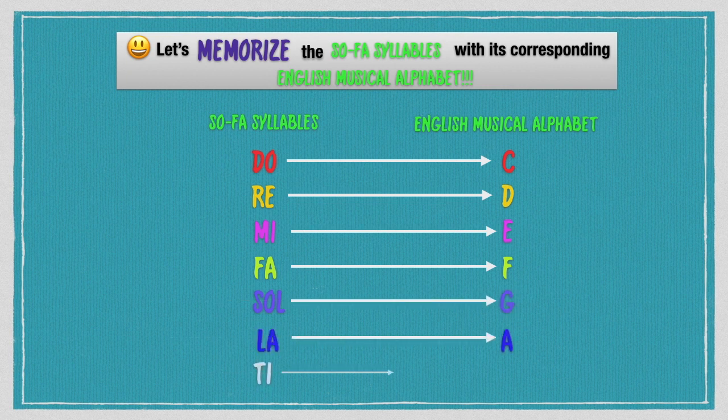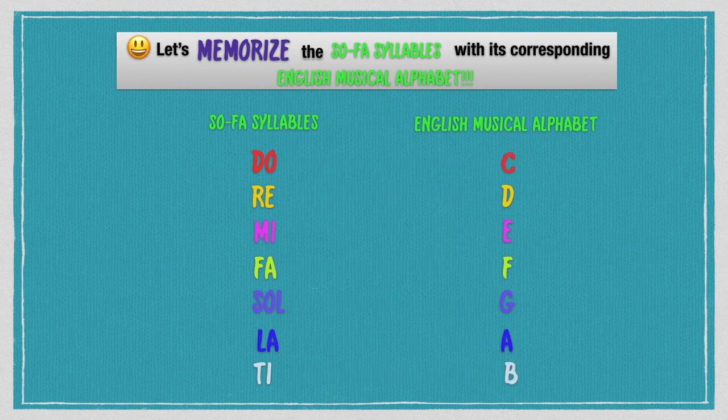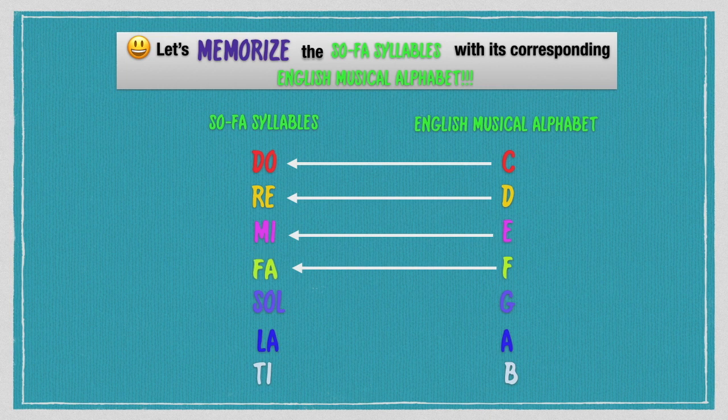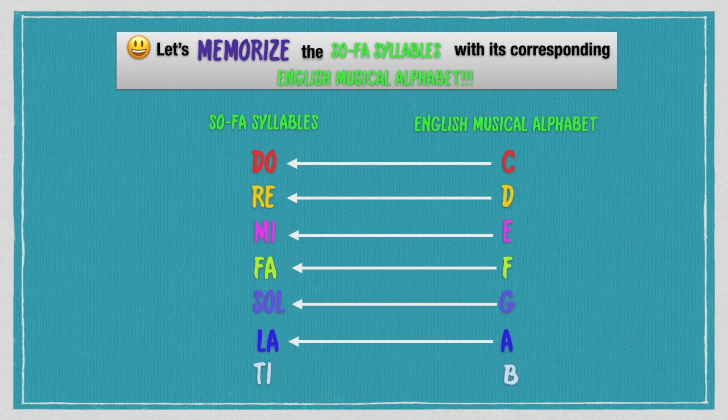Ti is B. Reverse, C is do, D is re, E is mi, F is fa, G is sol, A is la, B is ti.